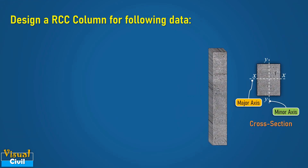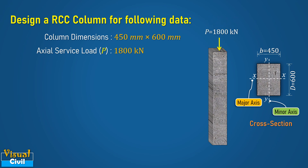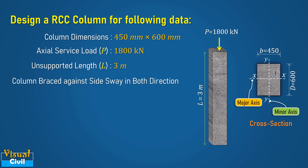In this video, we will learn the design of an RCC column for the following data. Column dimensions are 450 mm by 600 mm. Axial service load acting on the column is 1800 kN. Unsupported length of the column is 3 m. The column is braced against side sway in both directions at both ends. The grade of concrete is M20 and the grade of steel is Fe415.